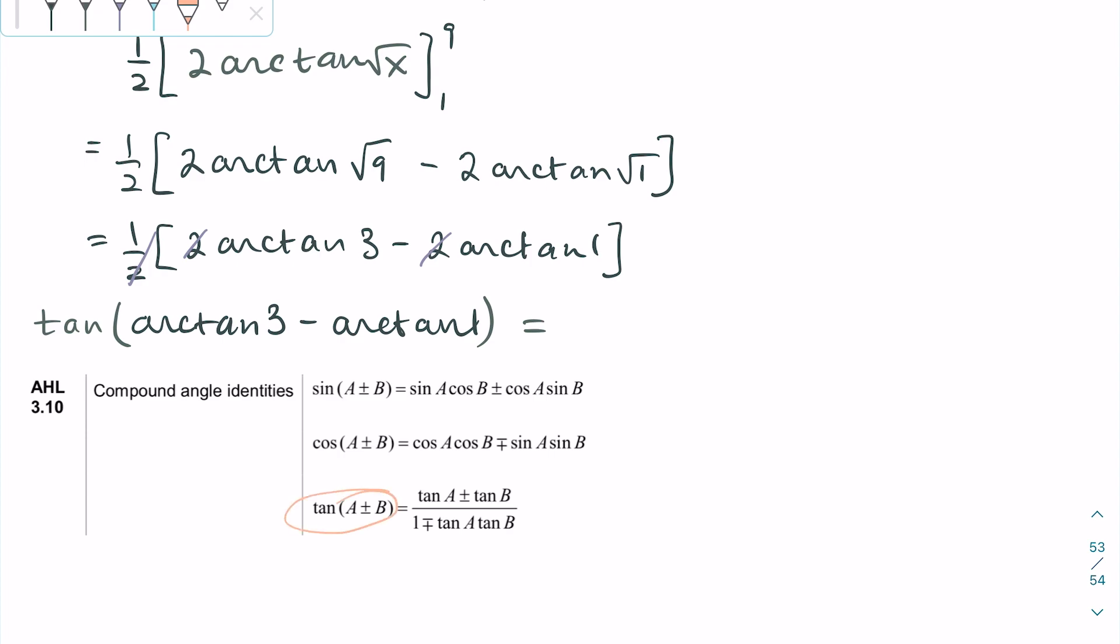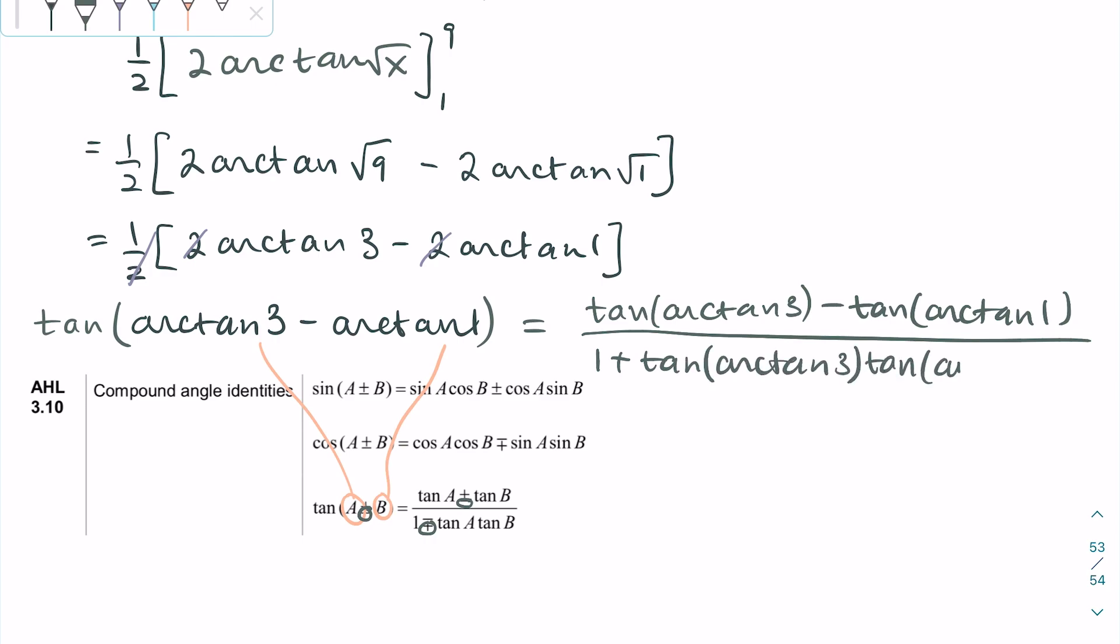The tangent of the sum of two values can be rewritten using this formula. Our A and B are arctan 3 and arctan 1 respectively, and we use the minus in the formula. This means we can rewrite this as tan arctan 3 minus tan arctan 1, over 1 plus tan arctan 3 times tan arctan 1.